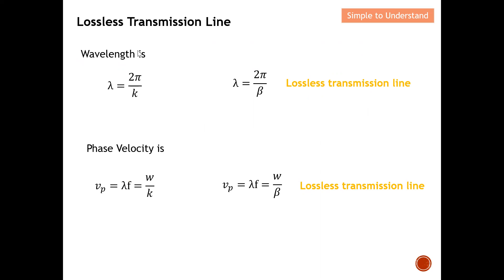Next, for the wavelength: typically the wavelength is defined in a standard form, and here we can replace k with β. This gives a straightforward representation of wavelength for a lossless transmission line. Similarly, for phase velocity — phase velocity is given by v = λf — and again k is represented by β. This form is used to represent the lossless transmission line's phase velocity.